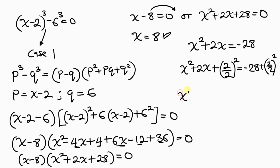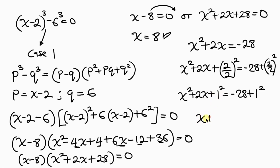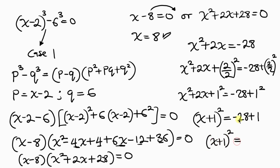So we have x squared plus 2x plus 1 squared equals negative 28 plus 1 squared. The left hand side is now a perfect square: x plus 1 all raised to the 2, equals negative 28 plus 1, which is negative 27.